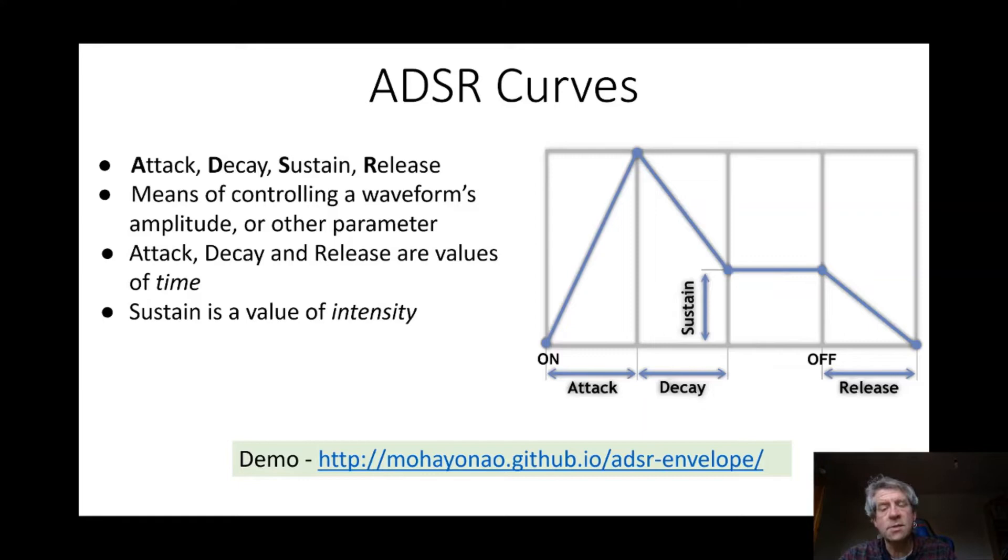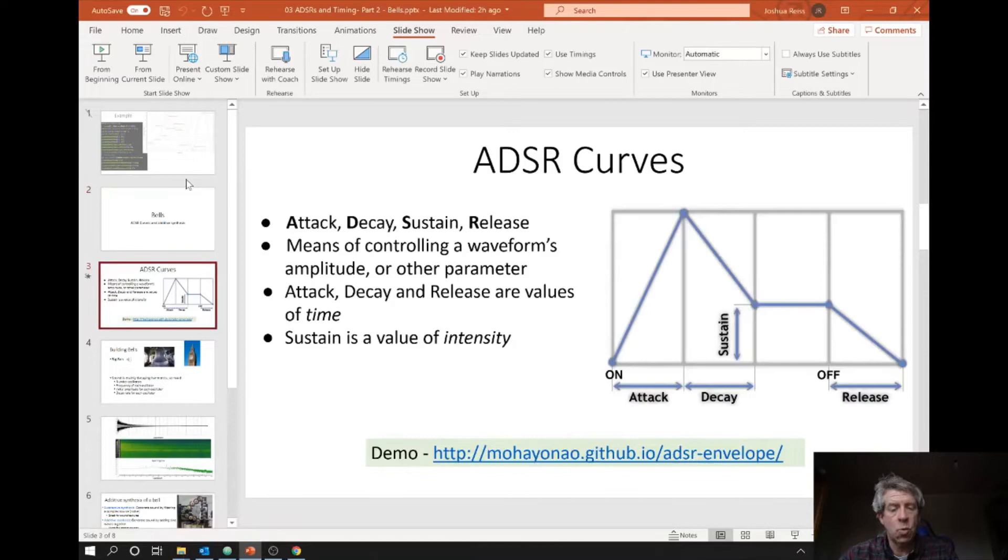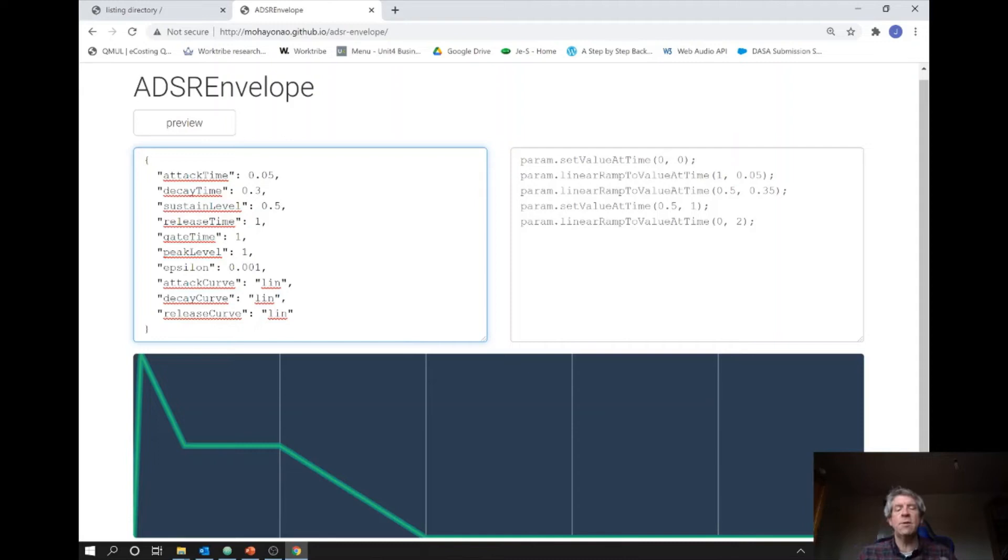So let's look at a nice demonstration of developing and listening to ADSR curves using the Web Audio API. Here is the website, for which there is a link. The person behind this created this nice sound and visualization tool. Over on the left you can specify the parameters of an ADSR curve; over on the right are the actual lines of Web Audio API JavaScript code for specifying how a parameter value changes over time.